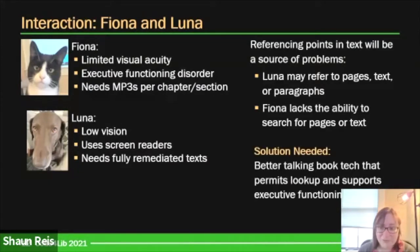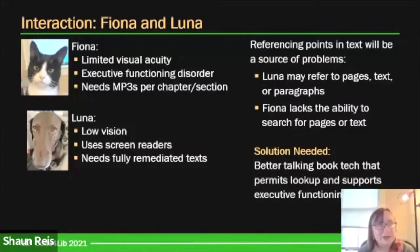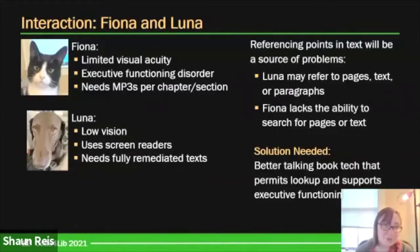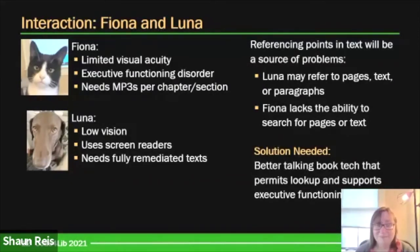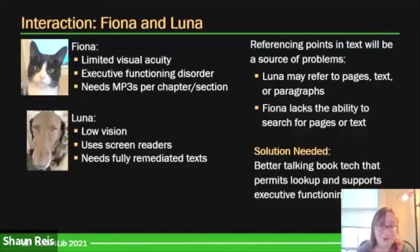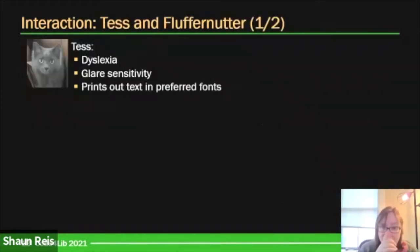In terms of a solution, this technology doesn't exist yet, but we need better talking book technology that both has access to the underlying text source and supports executive functioning more. Current screen readers and tools that read PDFs aloud are focused on text access but not necessarily the organizational skills around that. Let's go to another interaction. Now we're going to introduce Tess, a gray fluffy cat with light green eyes.